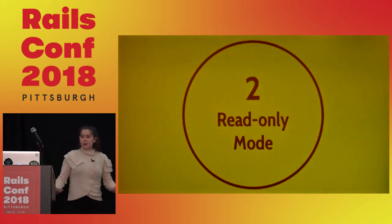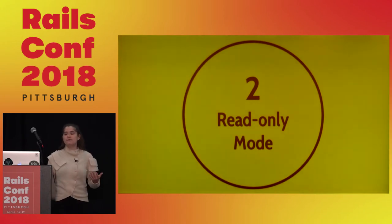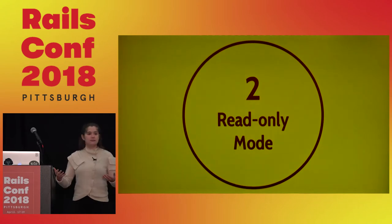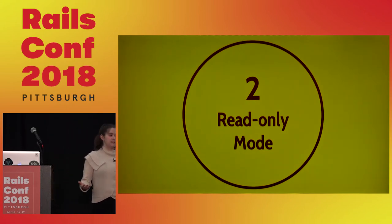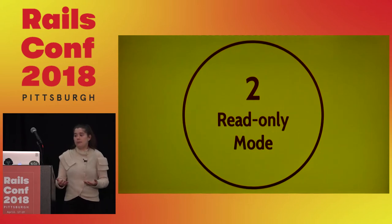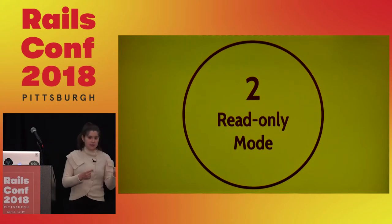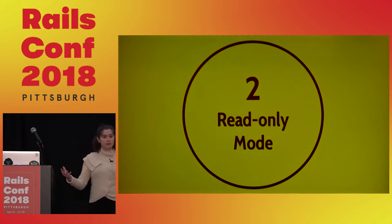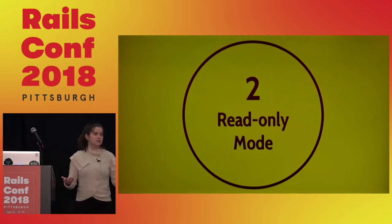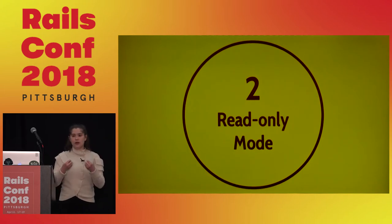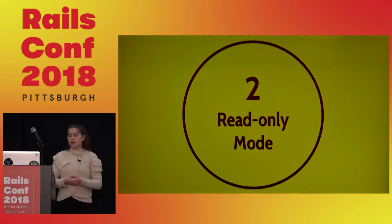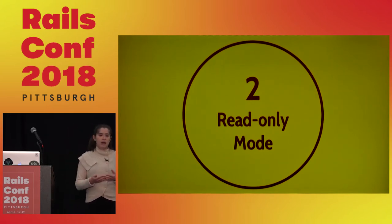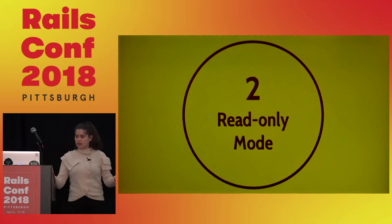The next tool is read-only mode. Most pieces of software exist to affect some sort of change in another system. For most of us at RailsConf, that work is to alter a relational database — but it could be transforming files, uploading to a file store, or launching containers on EC2 instances. Once you have an idea of what your application is modifying, think about what you can do if you can't modify that. What questions can you answer?